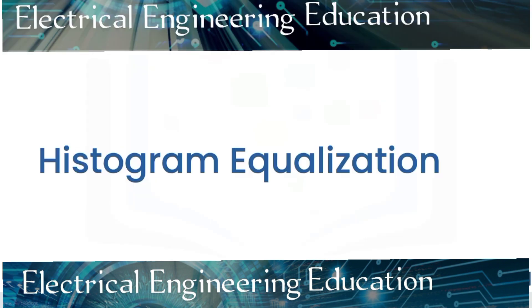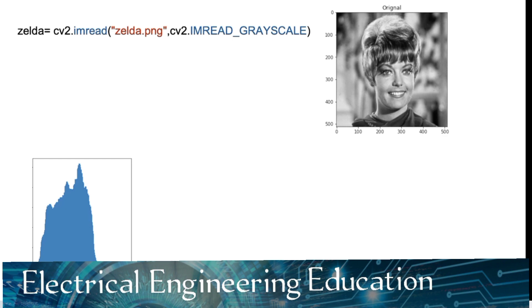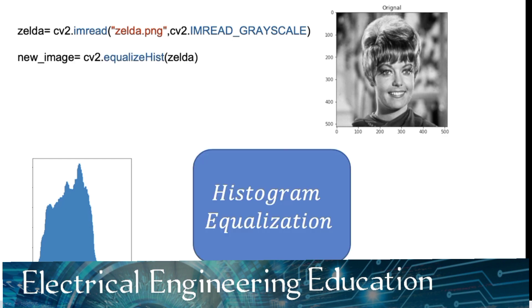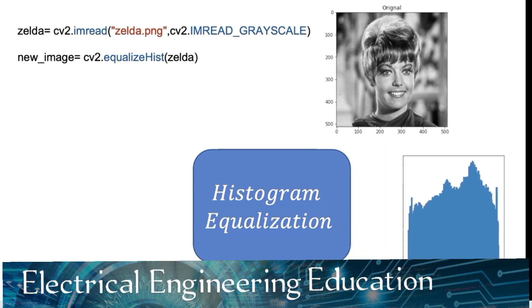Histogram equalization is an algorithm that uses the image's histogram to adjust contrast. Consider the following image with the following histogram. The function equalizeHist improves contrast by using the histogram to determine a transform that flattens the histogram. The resulting image has improved contrast.